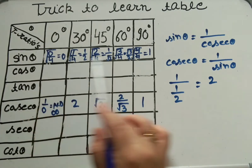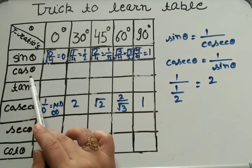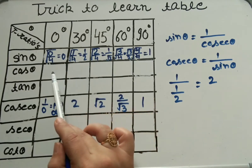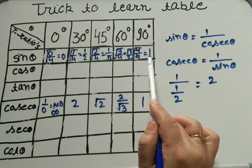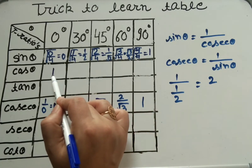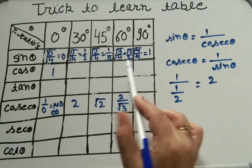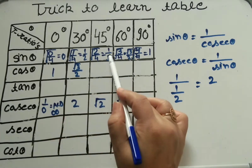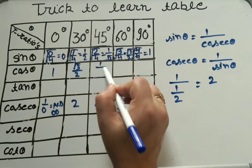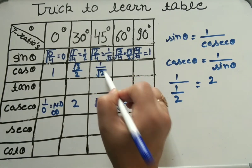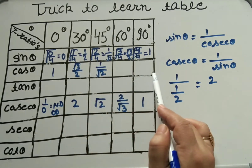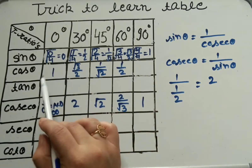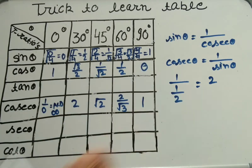Now using sin theta, we will solve for cos theta. To find cos theta, the terms that were at the end come to the front and the terms at the front shift to the back. So cos theta values are: 0° = 1, 30° = √3/2, 45° = 1/√2, 60° = 1/2, 90° = 0.